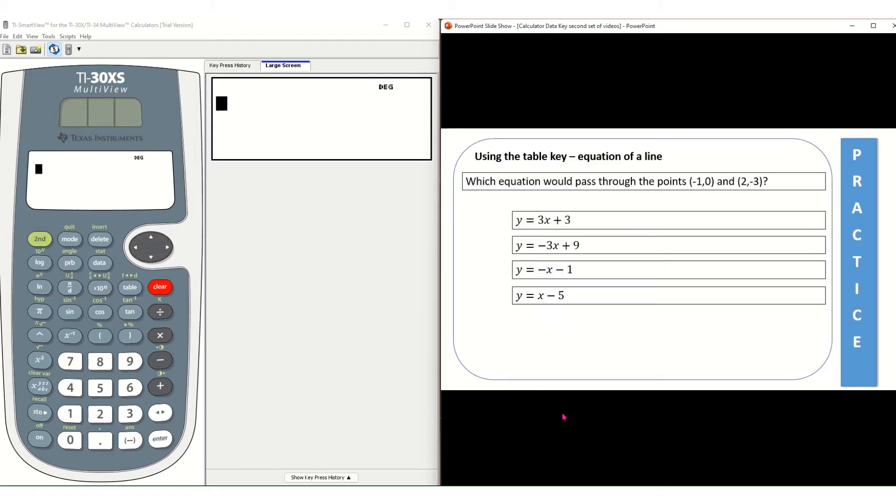So let's take a look at a possible question or an example of a question that you might see on the actual GED exam. It says which equation would pass through the points negative 1, 0 and 2, negative 3.